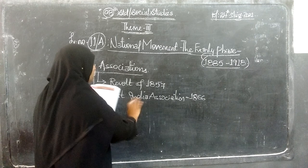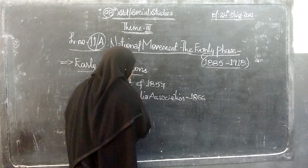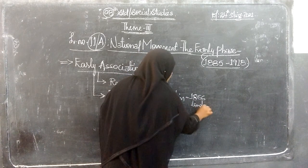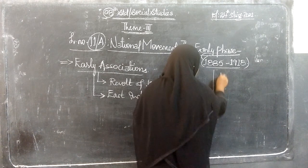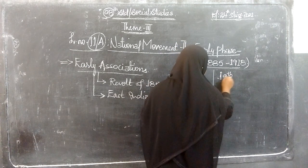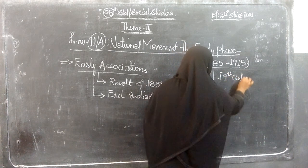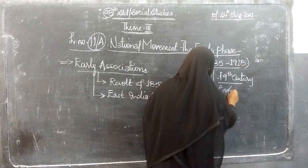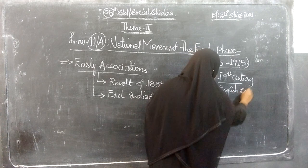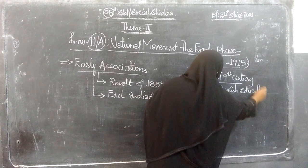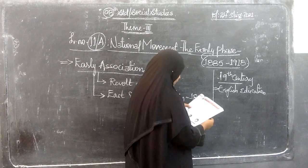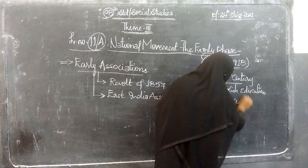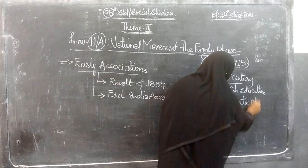This was the 18th–19th century period where the East India Association group was formed in London. In the 19th century, the British wanted to implement English education, and the people of India wanted equality and a democratic political order — meaning democracy.